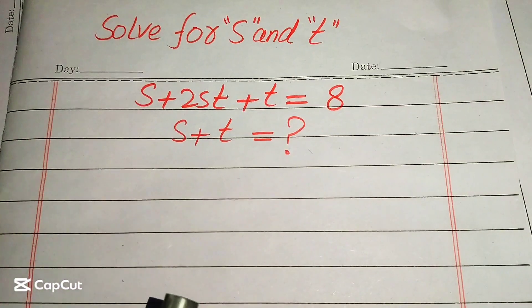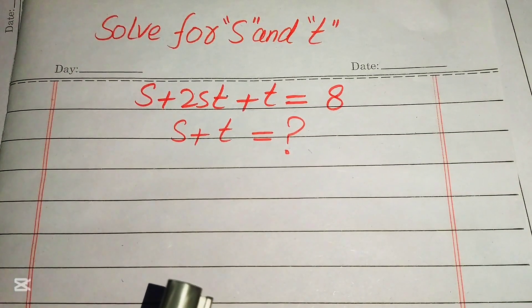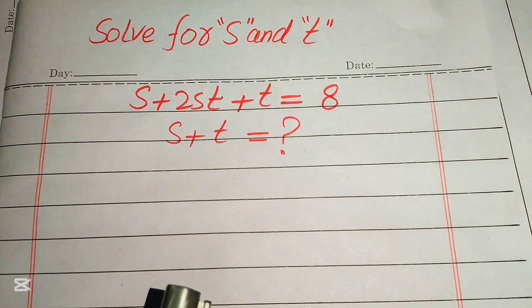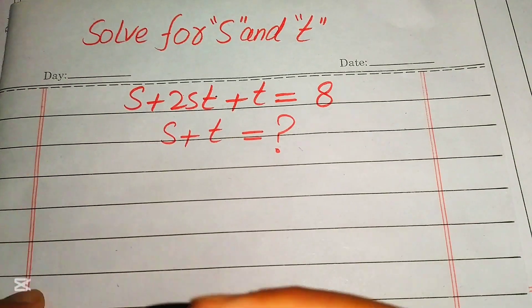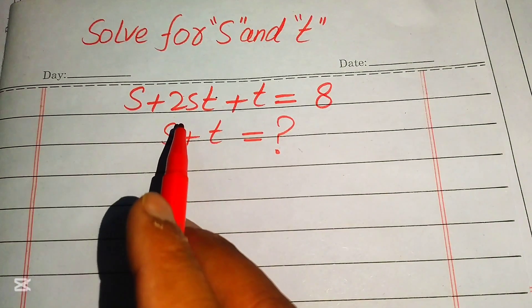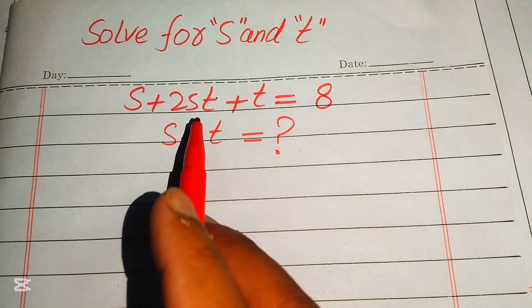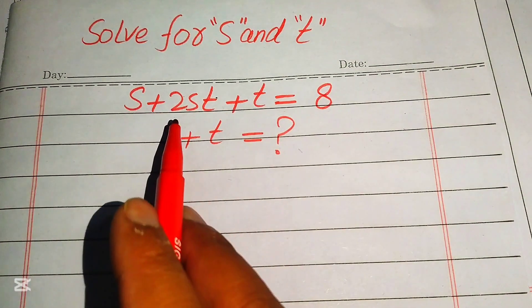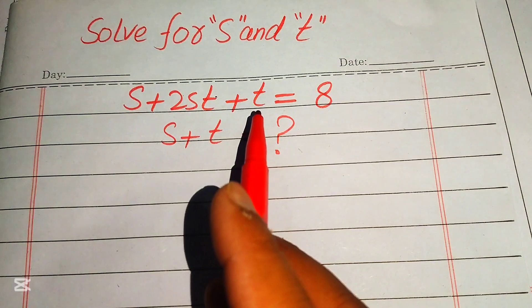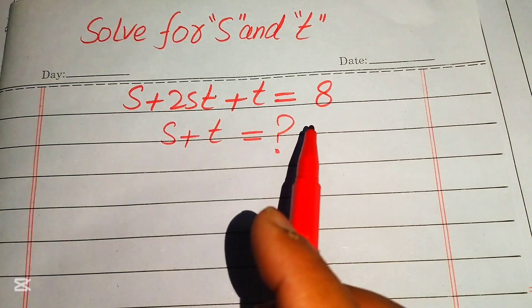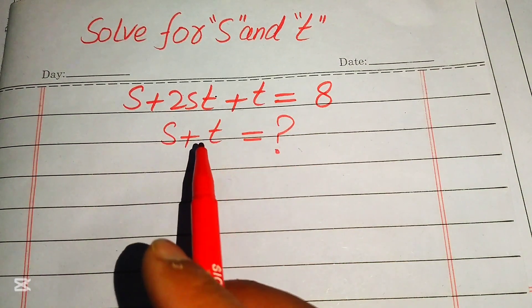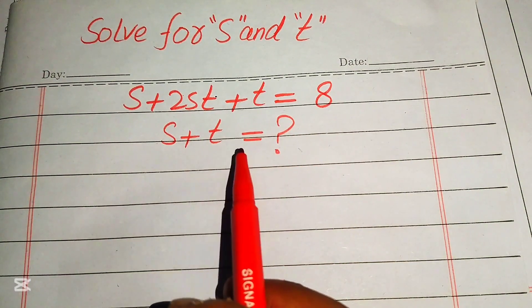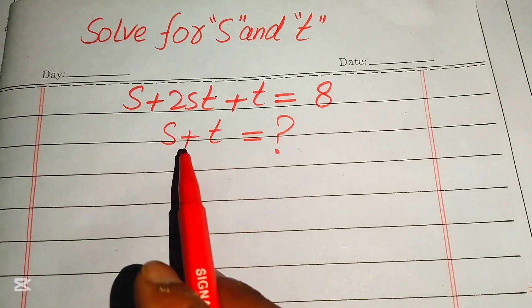Hi everyone, welcome! We have this nice algebra problem: s squared plus 2st plus t equals 8, and we need to find the value of s plus t.